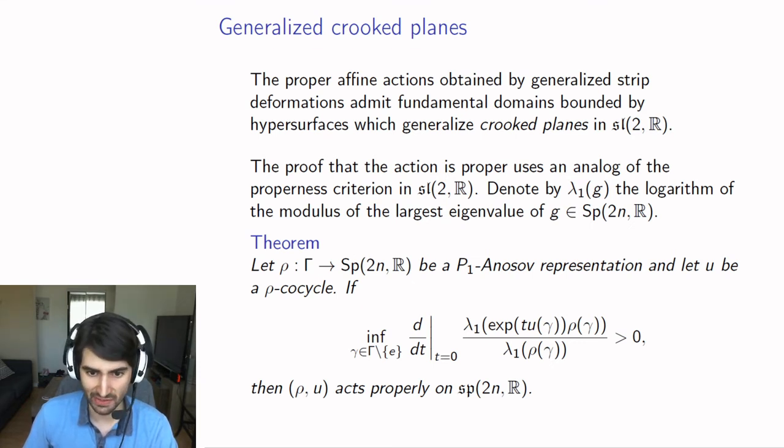Here's the statement. It's exactly the same statement as the one for the SL2R case, except we've replaced the translation lengths that were here by logarithm of the largest eigenvalue. Because we're assuming that the linear part is P1 Anosov, we know that rho of gamma for every element gamma has a unique, real, largest eigenvalue. It's biproximal in projective space.